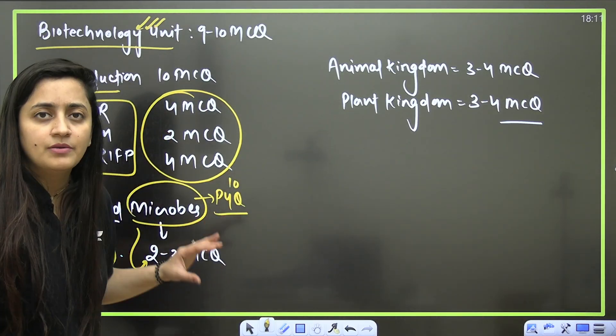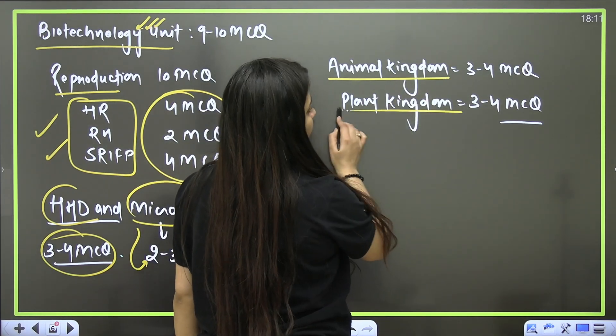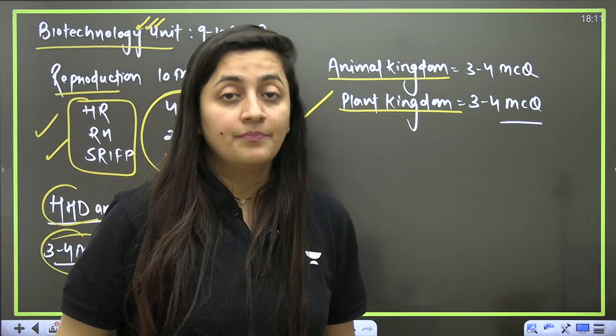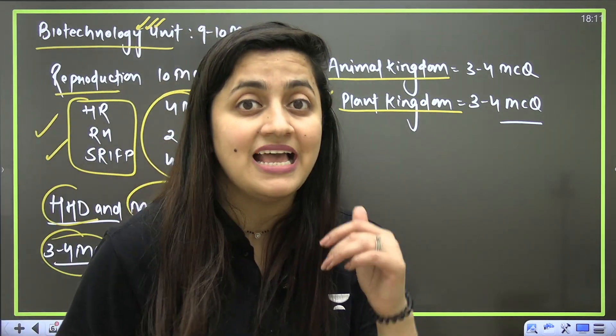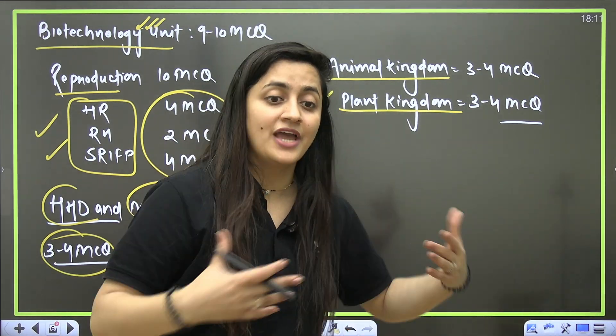Animal kingdom—three to four MCQs. Plant kingdom—three to four MCQs. This is the list of chapters which you are not allowed to miss at all. But it doesn't mean you don't have to do other chapters. You can go for it, but if you are running out of time, this is the list for you.